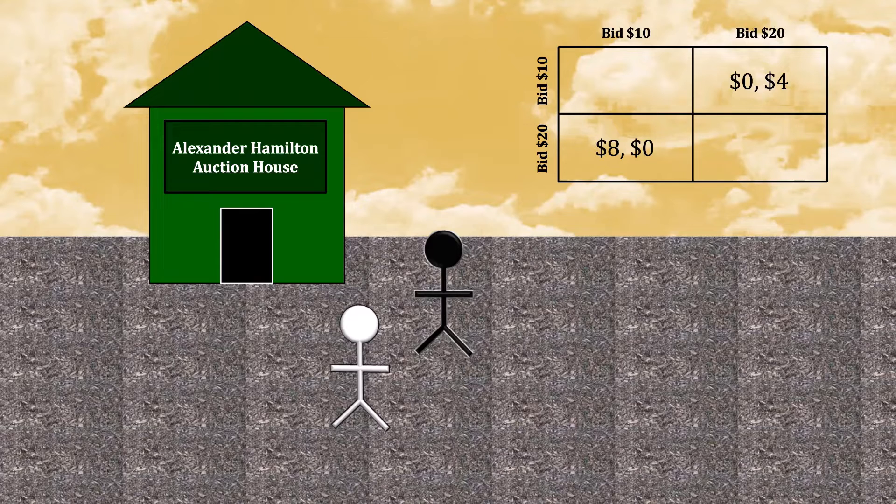When you do win after having bid $10 in this tie, things are very good for you. You receive a $28 book for only $10. So, conditional on having won the tiebreaker, you get $18 in profit. But because you only win the tie-breaking coin flip 50% of the time, your net profit here, in expectation, is only $9.